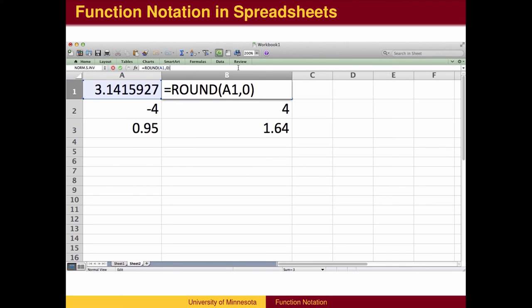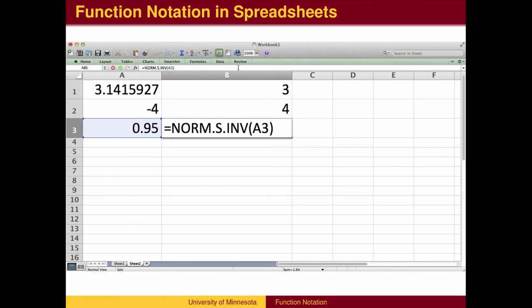Those familiar with spreadsheets may be familiar with spreadsheet functions, which have the same format. Round is a function which takes a variable input from some cell name and rounds off the answer. abs is the notation for the absolute value function. Students of statistics may compute a z-score using the normal distribution, otherwise known as the bell curve.